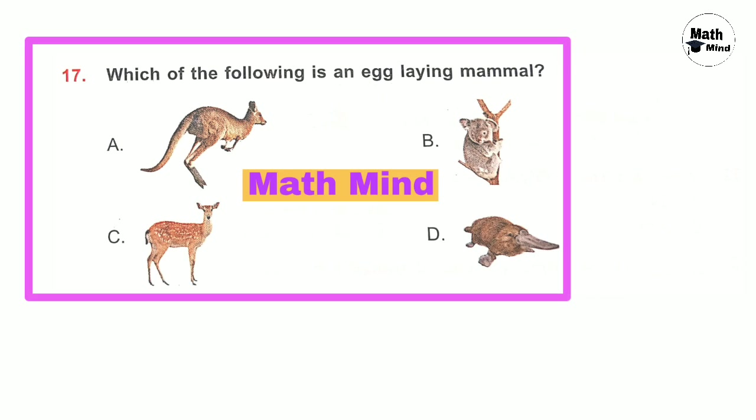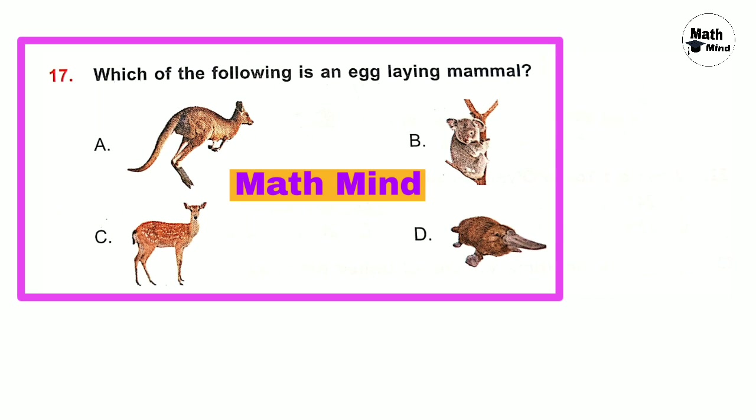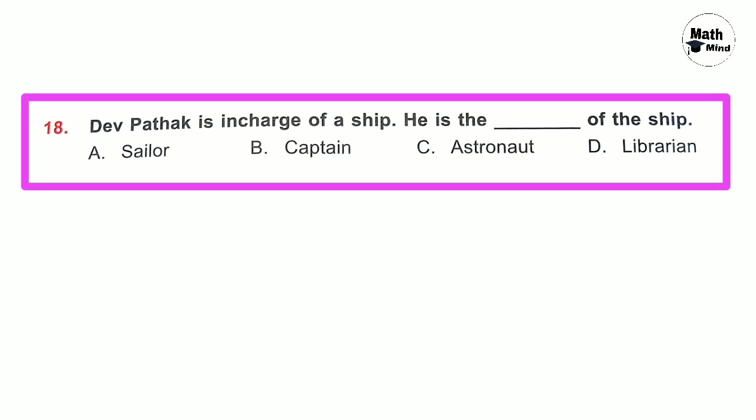Question number 17: Which of the following is an egg-laying animal? Option D is correct — platypus. Question number 18: Dev Patak is in charge of a ship. He is the dash of the ship. Option B is correct — captain is in charge of a ship.